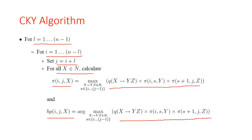To justify the recursive definition: any tree t rooted in X spanning words x_i to x_j must consist of a rule X → YZ at the top, a split point s ∈ {i, ..., j−1}, a subtree t1 rooted in Y spanning x_i to x_s, and a subtree t2 rooted in Z spanning x_{s+1} to x_j. The probability of t is then the product of three terms: the rule probability q(X → YZ) and the probabilities of subtrees t1 and t2.